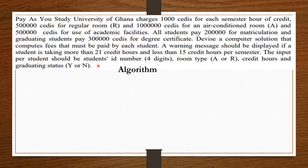The input per student should be: the student's ID number (4 digits), room type A or R, number of credit hours, and graduating status Y or N.